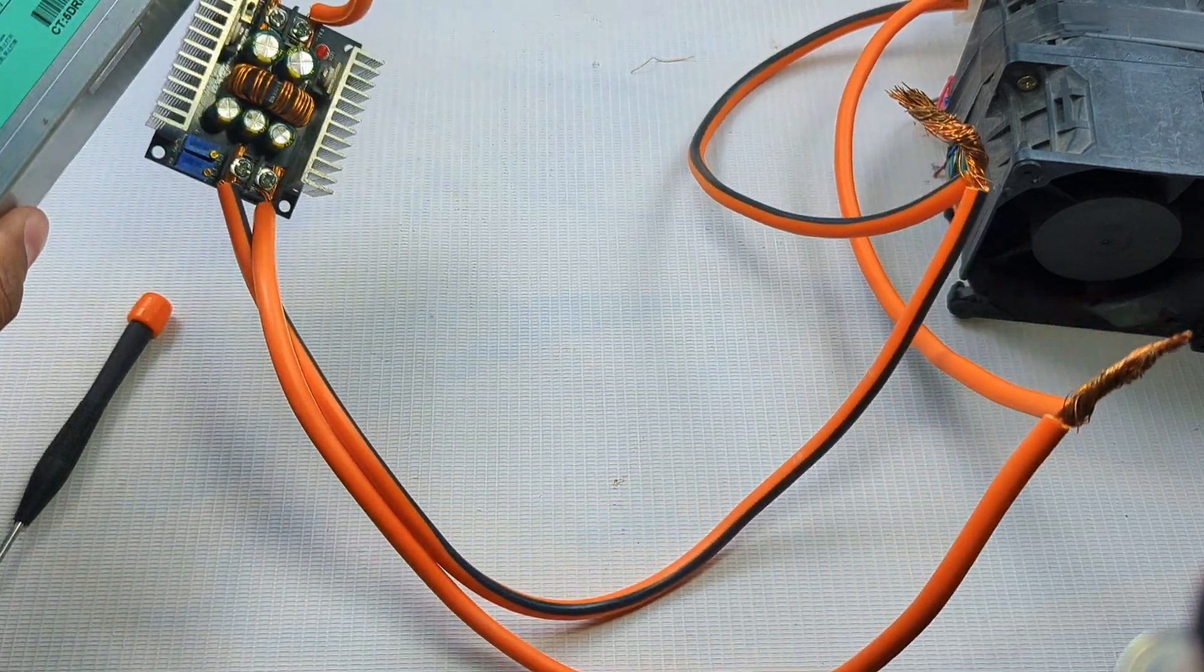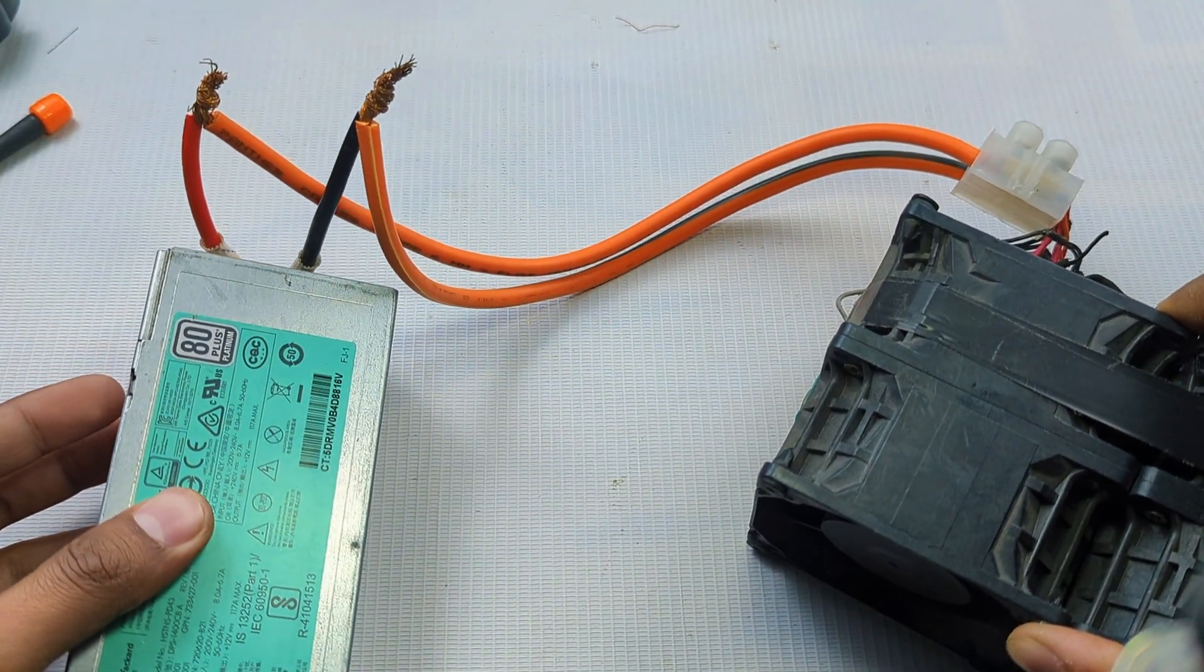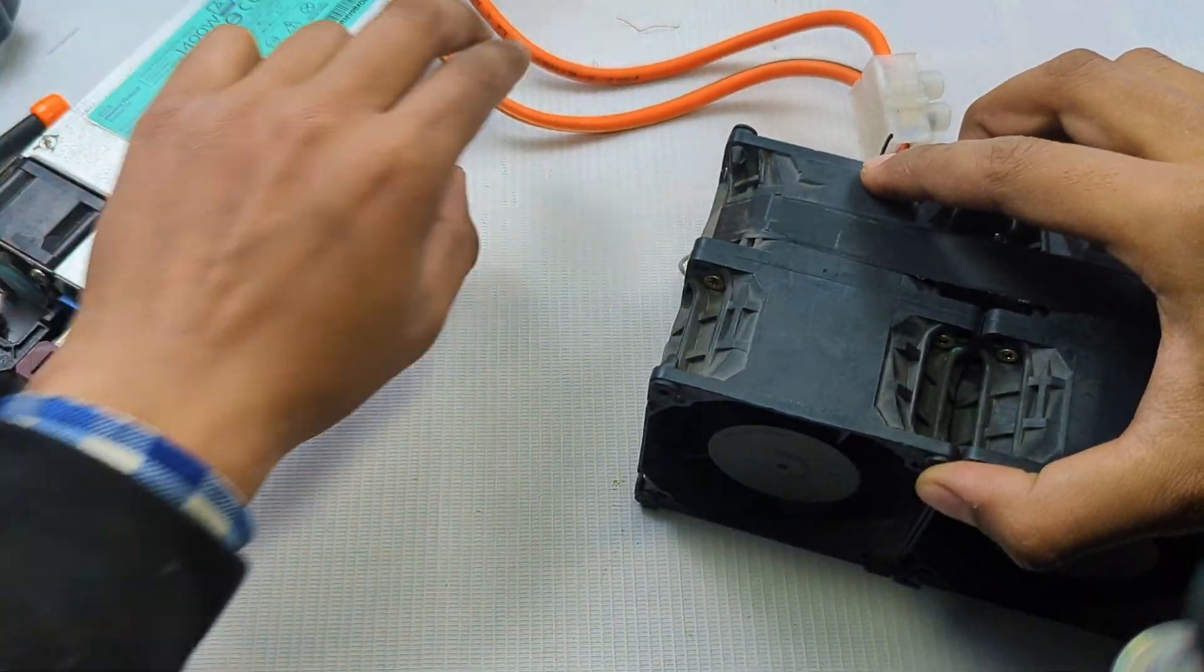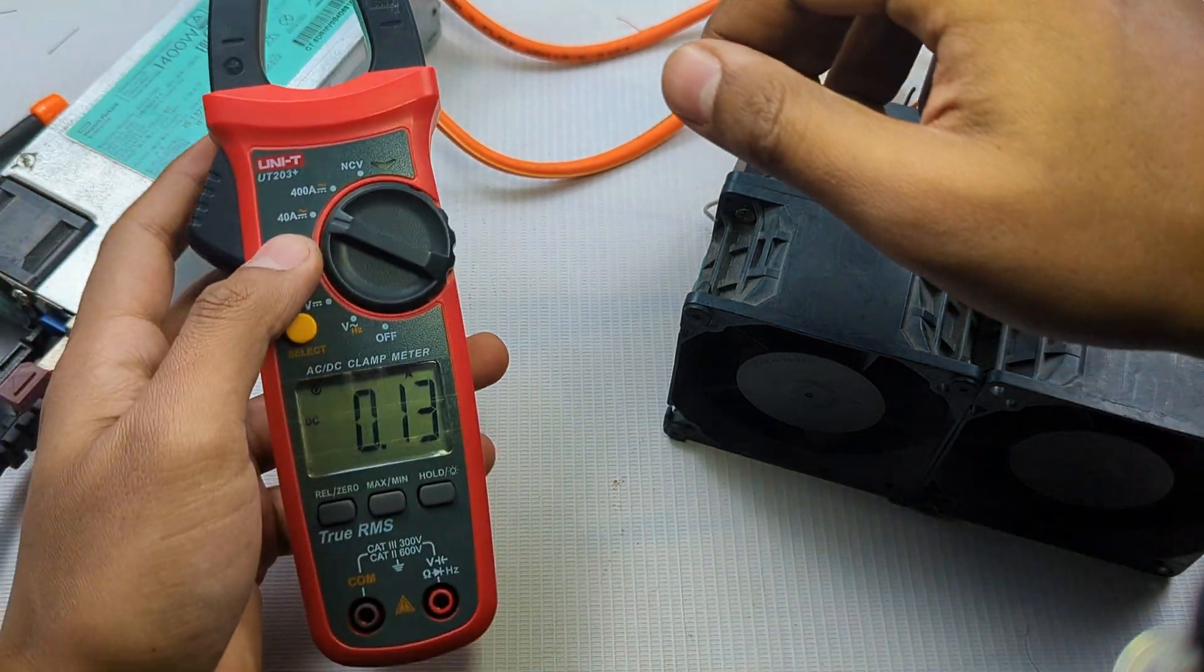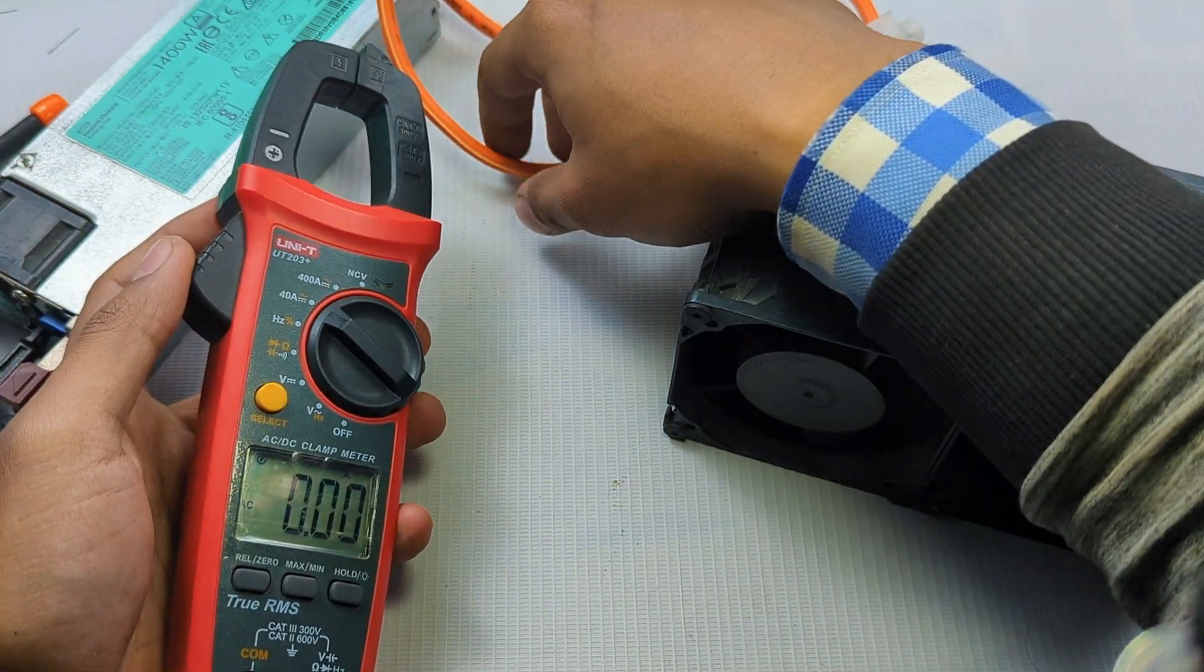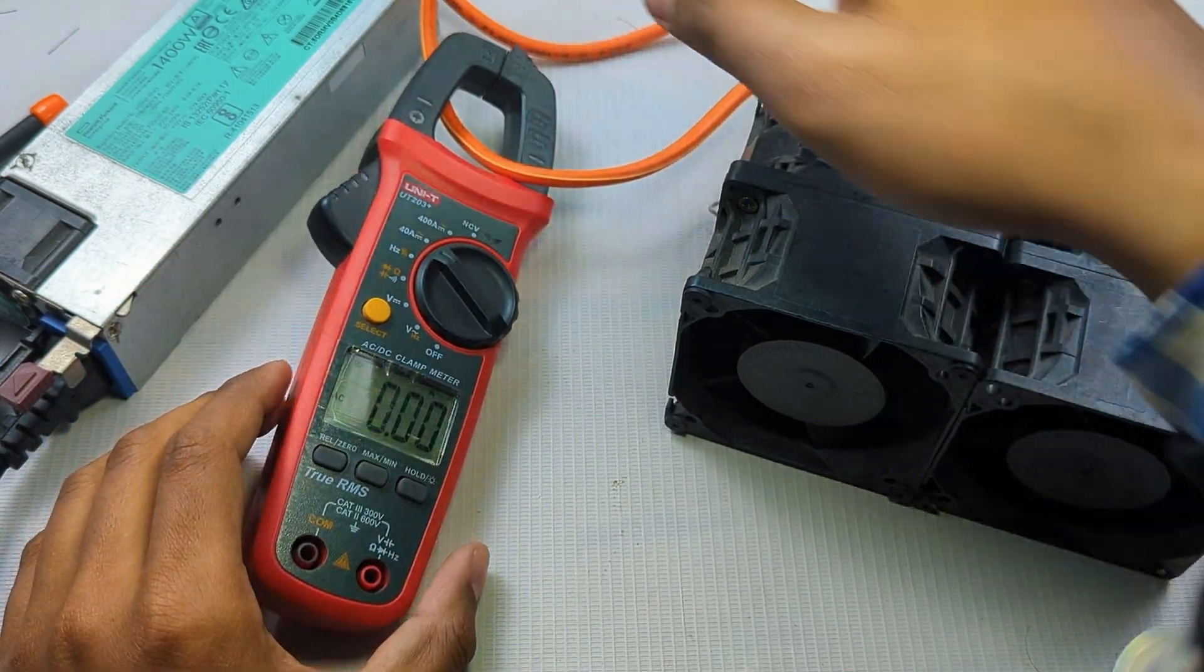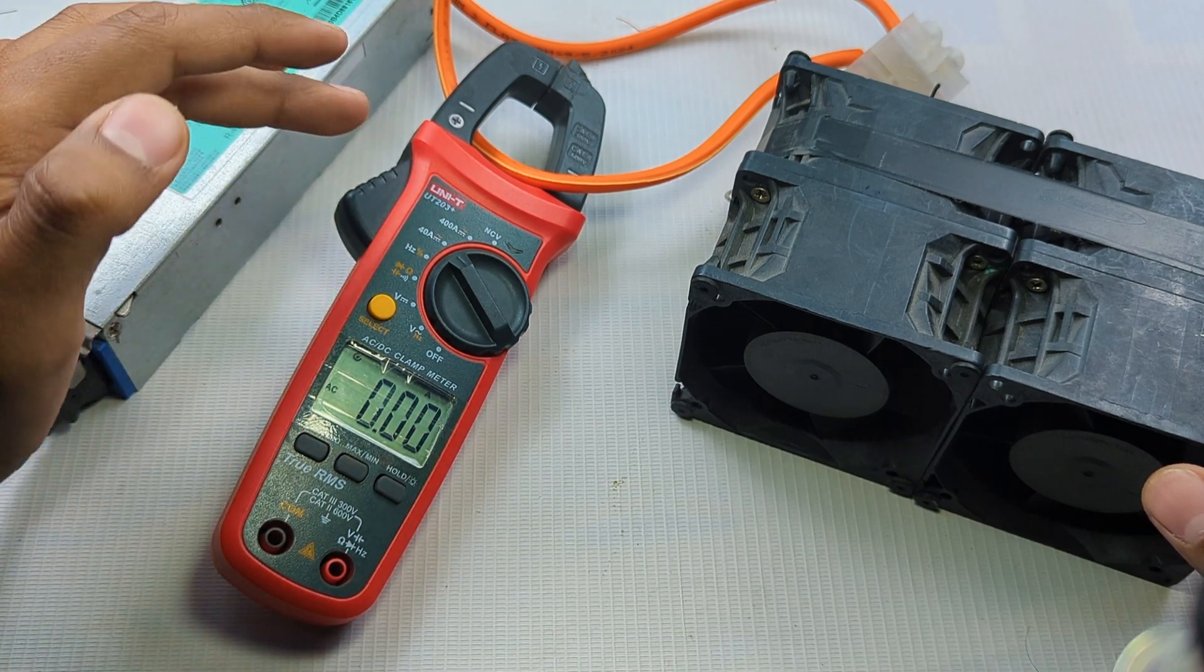So let's do the wiring again. Now the fans are directly connected to the 14 volts output of the power supply. So let's see. Let me just set up the clamp meter to show the ampere reading. These will take the 14 volts output now. So let's measure the amps.